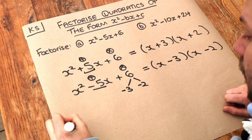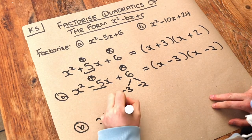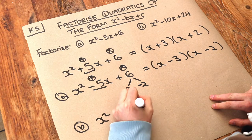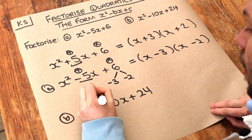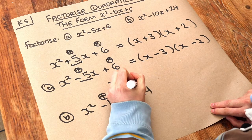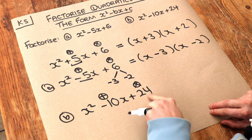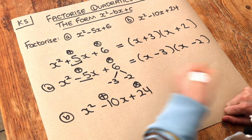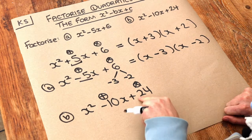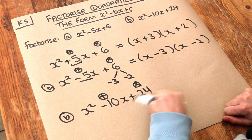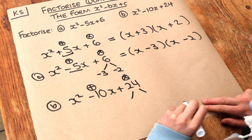What about this next one, B? We've got x squared minus 10x plus 24. Again, we need two numbers which add to give negative 10 and multiply to give positive 24. Now if they both multiply to give a positive number, they're either both positive or both negative. They can't both be positive, because they wouldn't add up to minus 10. So both these numbers that multiply to give 24 must be negative.